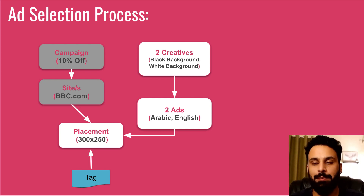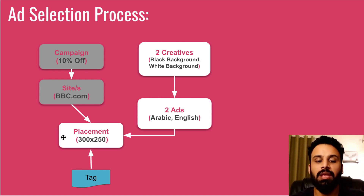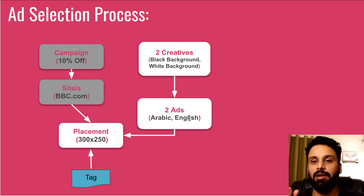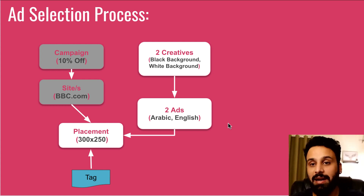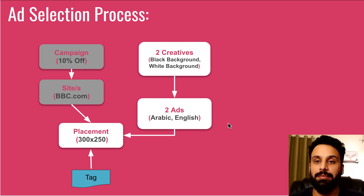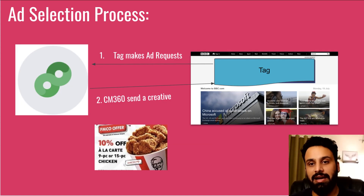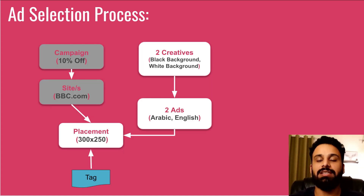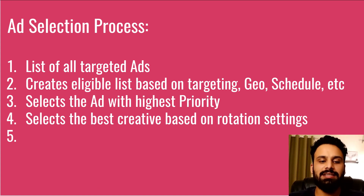Always remember: when a tag makes a request to Campaign Manager, the first thing it checks is which placement the tag is associated with. It identifies, for example, BBC 300x250. Then Campaign Manager checks which ads are targeted to that placement so it can return the appropriate creative. This process — from receiving an ad request to sending the creative — is called the ad selection or ad serving process.